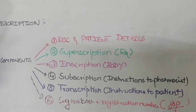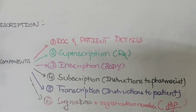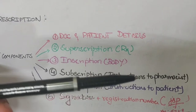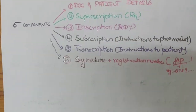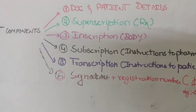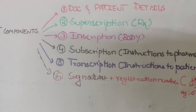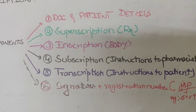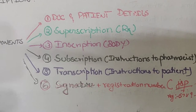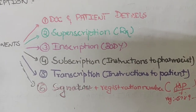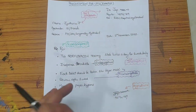Subscription is the instructions to the pharmacist — like how many tablets to dispense or how much syrup should be dispensed. Coming to transcription, it gives the instructions to the patient, such as how many times the tablet should be taken, how much quantity, or how many milliliters of syrup should be taken. Finally, we provide a full signature and below that we write the registration number.